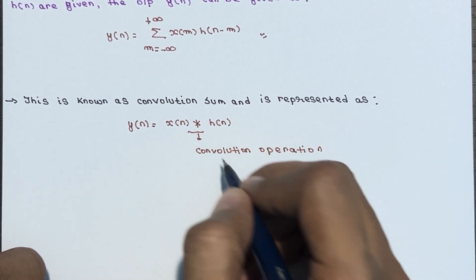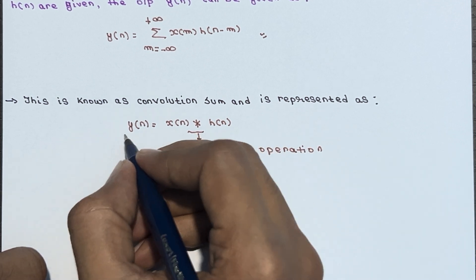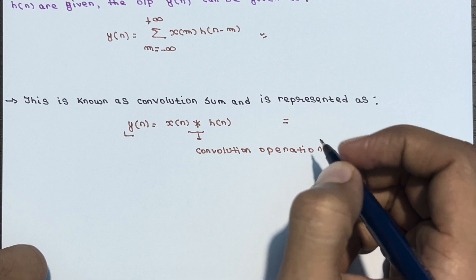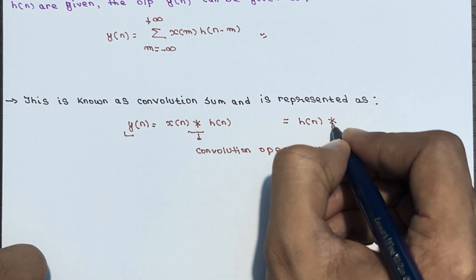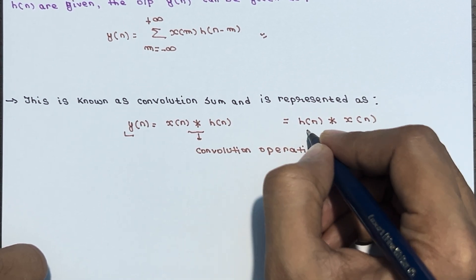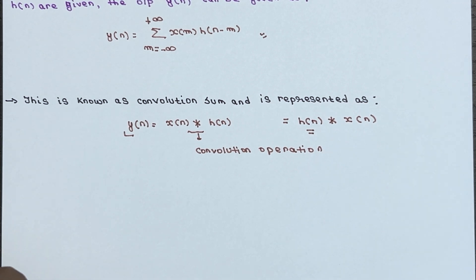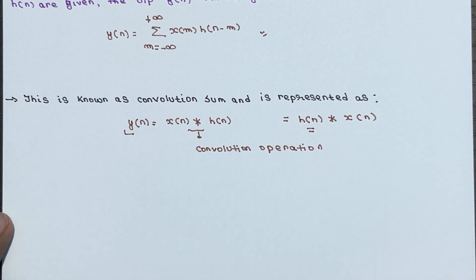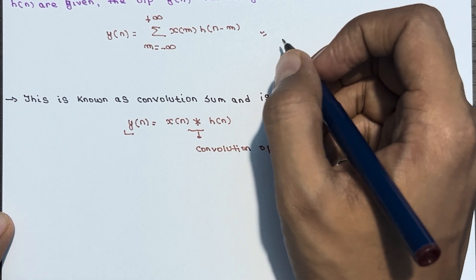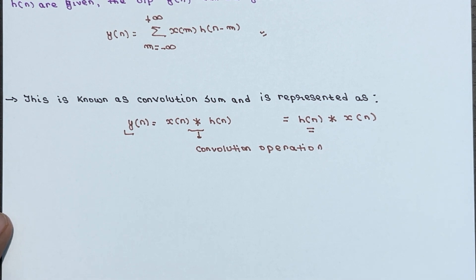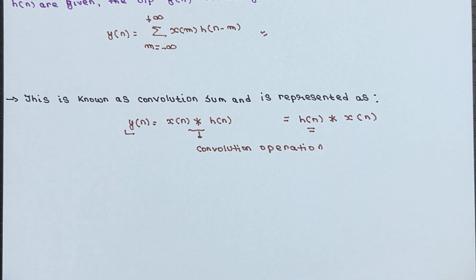So y(n) = x(n) * h(n), and by the commutative property this also equals h(n) * x(n) — we will prove this as well. That is all about the convolution sum. For an LTI system, if you want to calculate the output, this is the formula derived using the convolution sum. If you have any doubts, ask in the comment section.